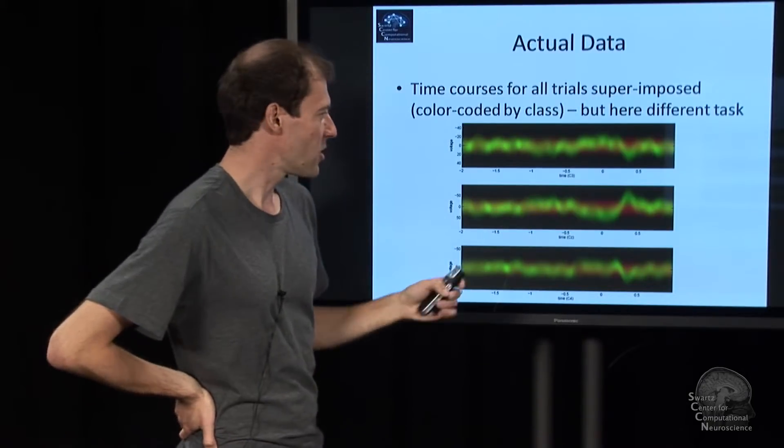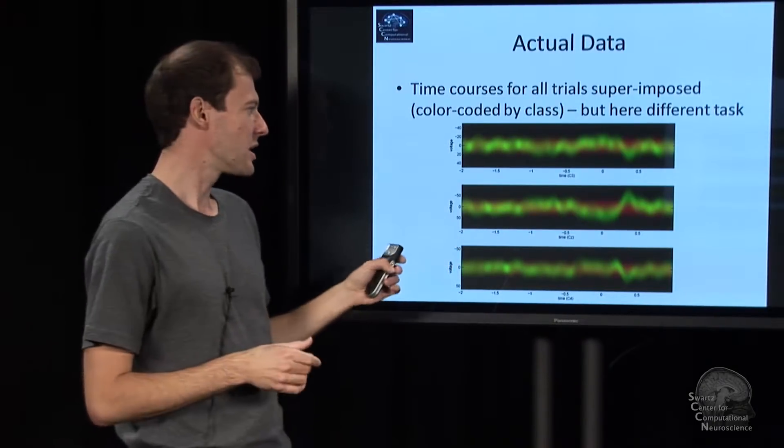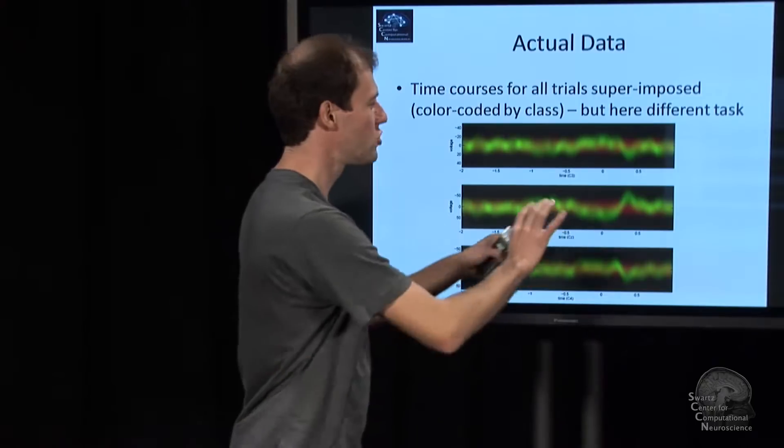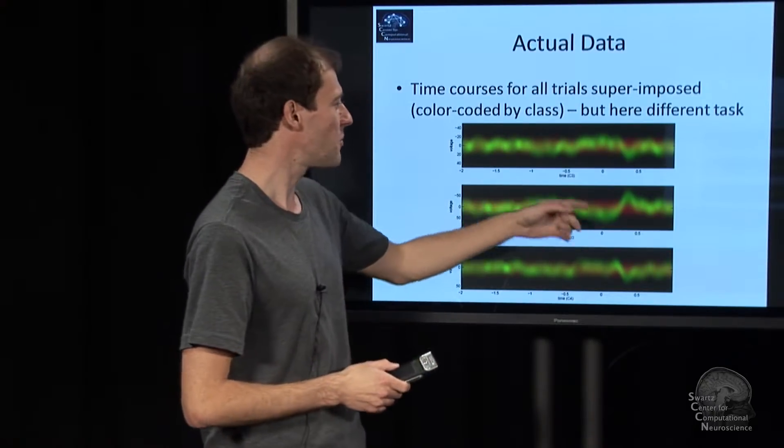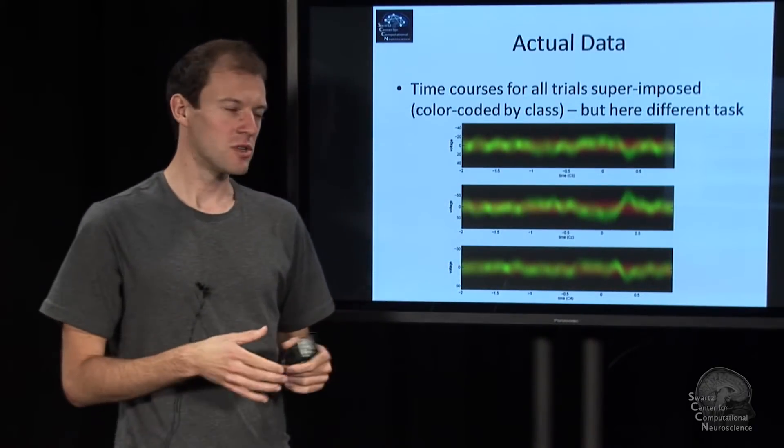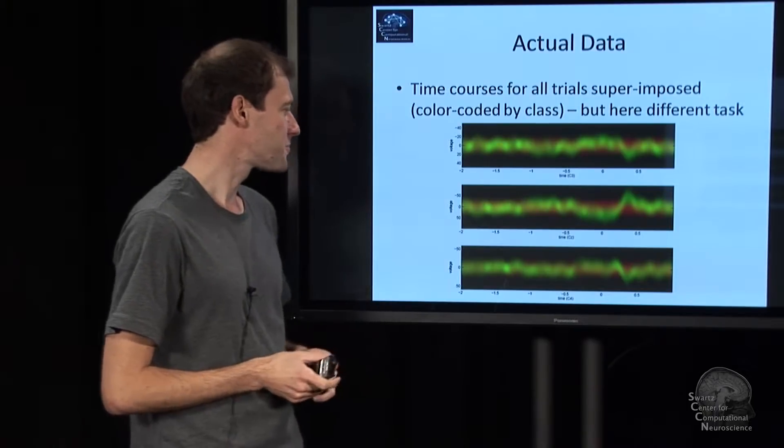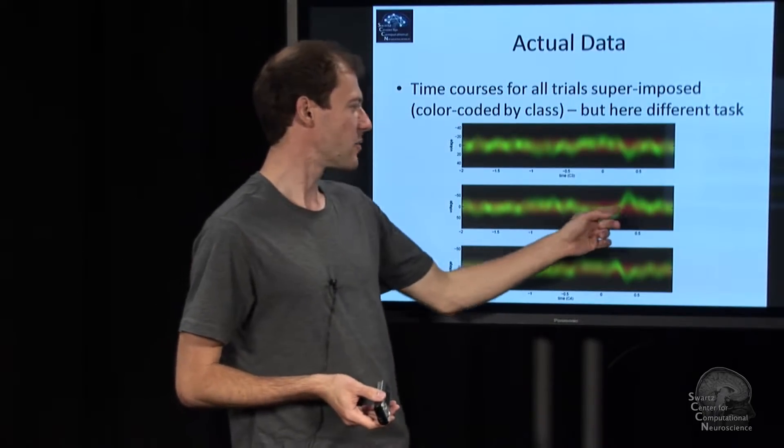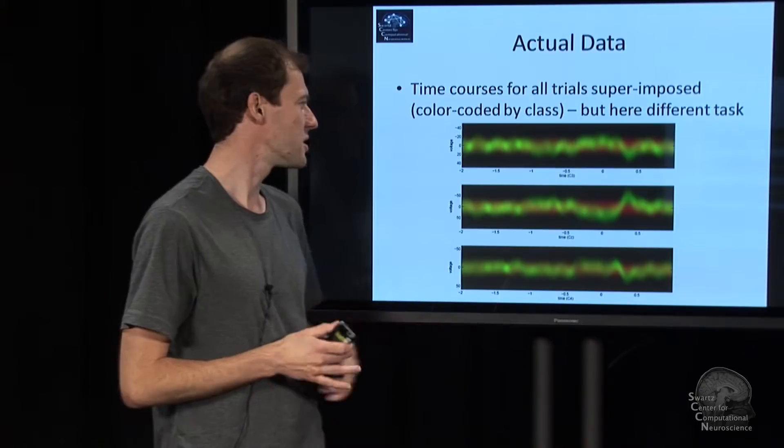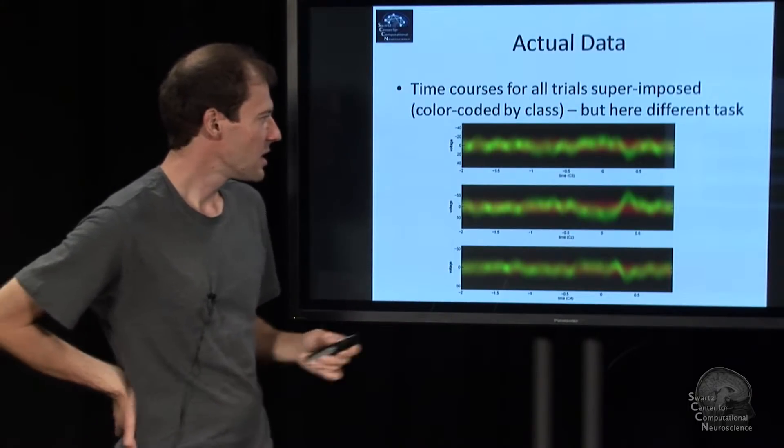But it can very well happen in actual data that for both conditions you just have some time course, and you're trying to find what features and what parts of this are actually informative. If you look at this, you can already see that if you pick this sample here